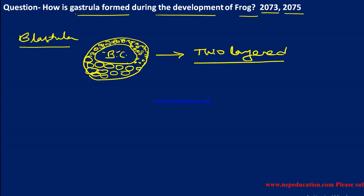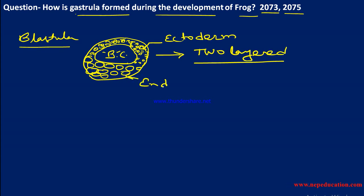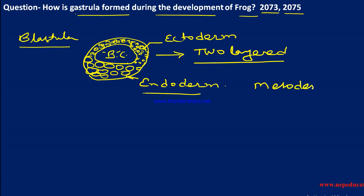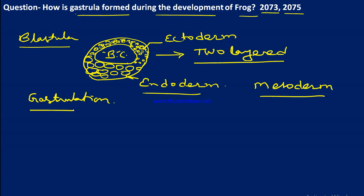In the gastrula stage, this single-layered blastula is going to be changed into a multilayered — two-layered or three-layered — structure. The micromeres will form the ectoderm, one of the germinal layers, and the megameres will form the endoderm. Between these two, the third layer is the mesoderm. This change from blastula to gastrula — the formation and development of the gastrula — is called gastrulation.